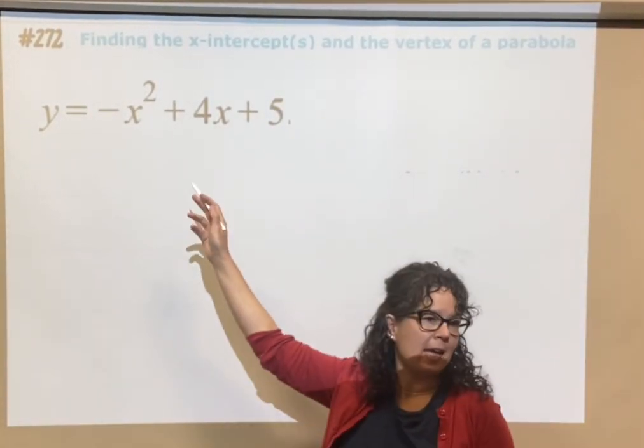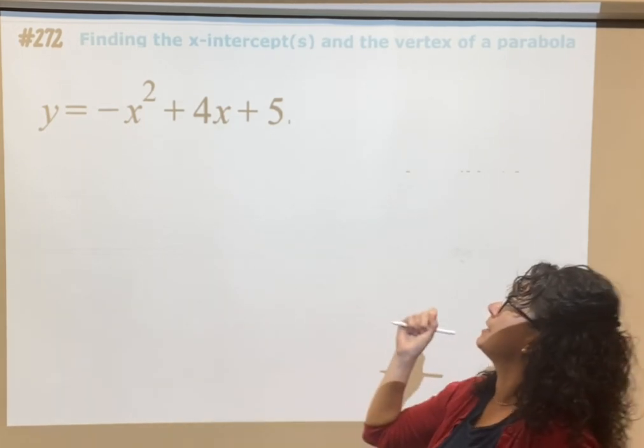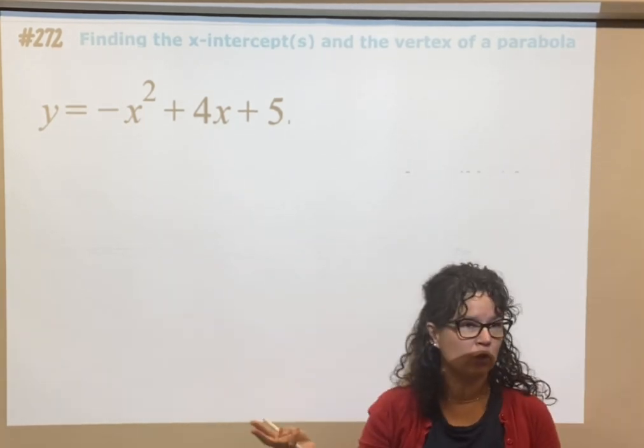So if we have this quadratic, ax squared plus bx plus c, we want to ultimately find the x-intercepts and the vertex.